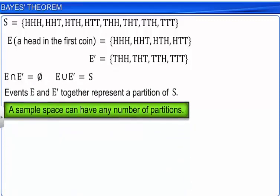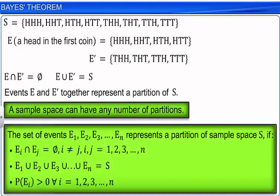In general, a set of events E1, E2, E3, and so on till En represents a partition of sample space S if they are pairwise disjoint, the union of the events is the sample space itself, and the probability of each event is greater than zero.